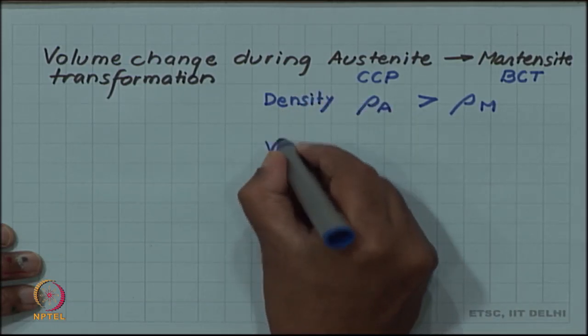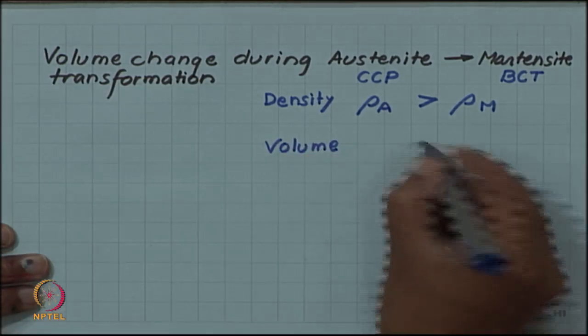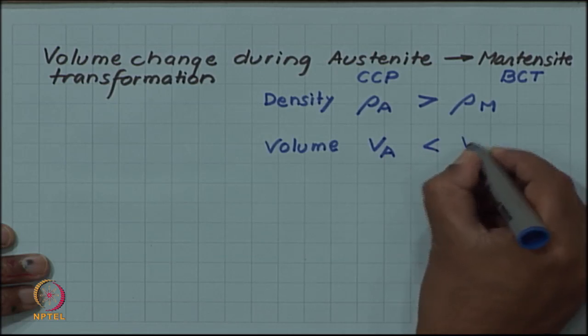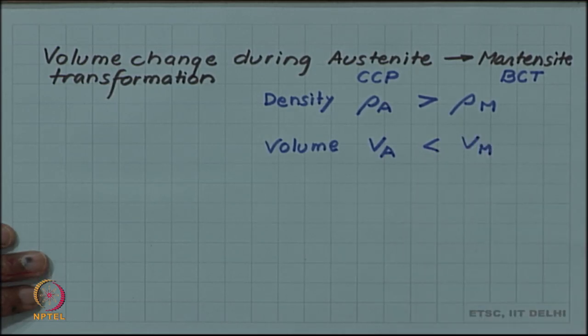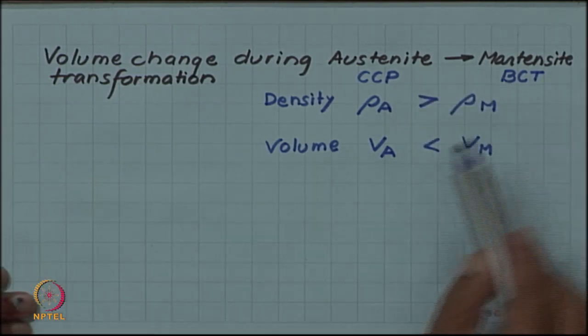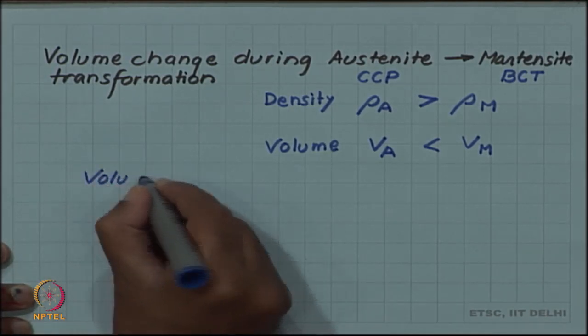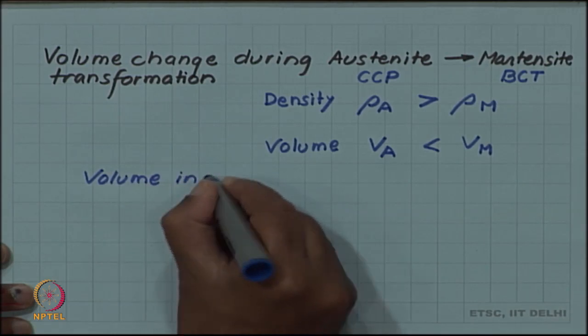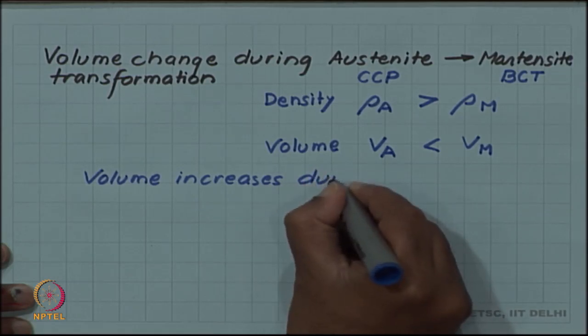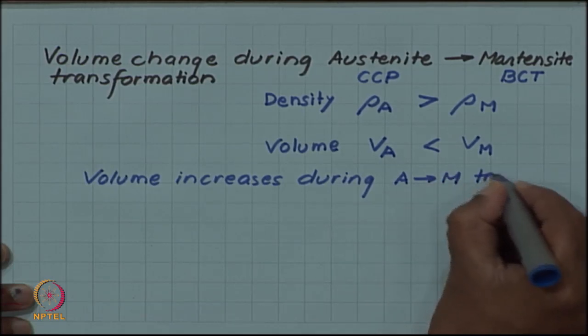Or in terms of volume, volume of austenite will be less than the volume of martensite. So which means an expansion takes place when austenite will change to martensite, volume will increase. This volume increase during austenite to martensite transformation.